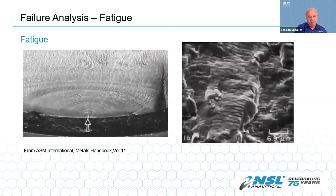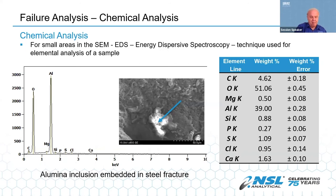Here are a couple of fatigue failures to compare with the handbooks. In real life, they're very rarely this pretty — they don't have little arrows showing where the origin is, and many times fatigue striations don't look as nice as they do in textbooks. If you need a chemical analysis of a very small area, EDS can be used. Occasionally the analyst will see inclusions or foreign material at the origin of the failure, particularly in fatigue failures, and EDS can be used to identify what the inclusion is made of.